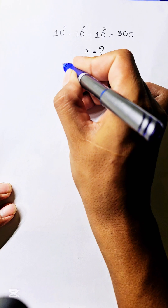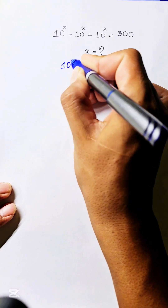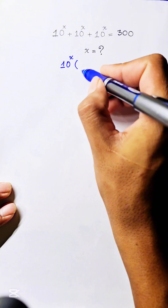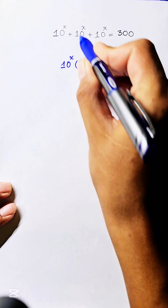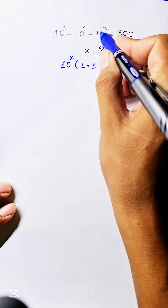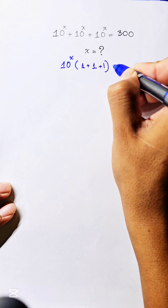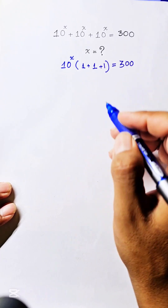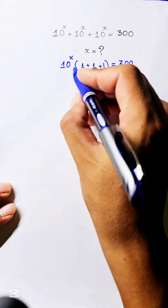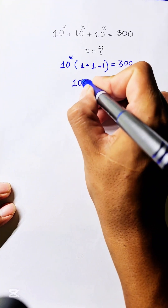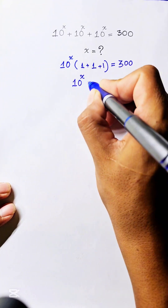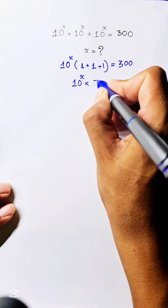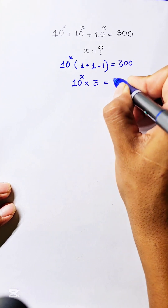Factoring out 10 power h, we get 10 power h times (1 plus 1 plus 1) equals 300. So 10 power h times 3 equals 300.